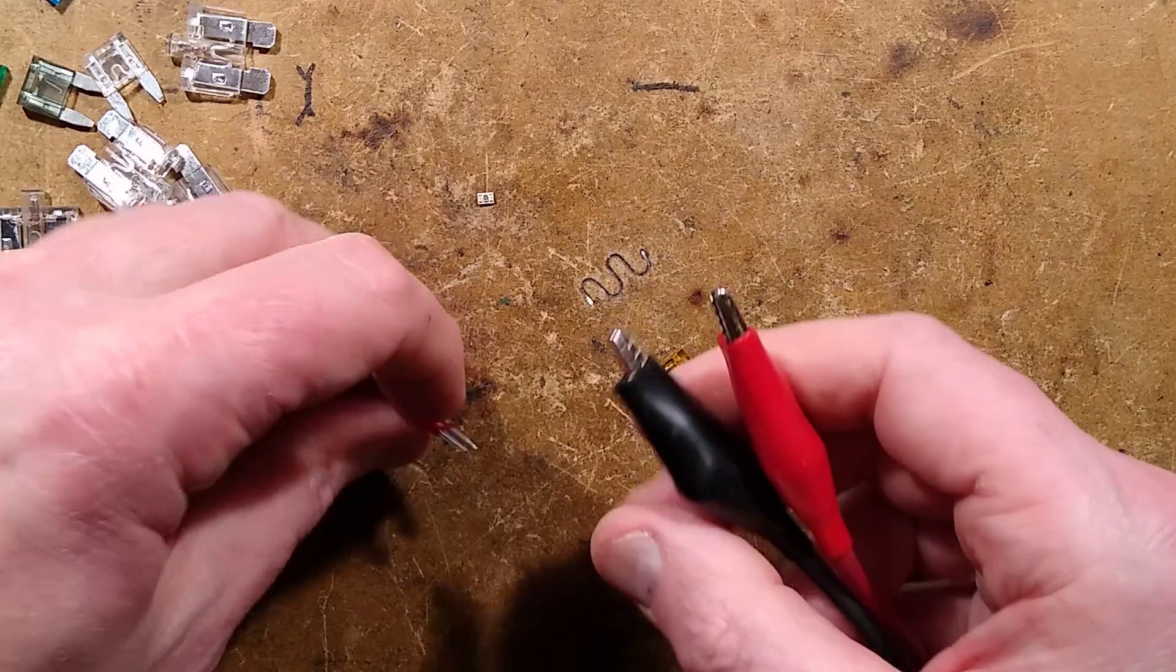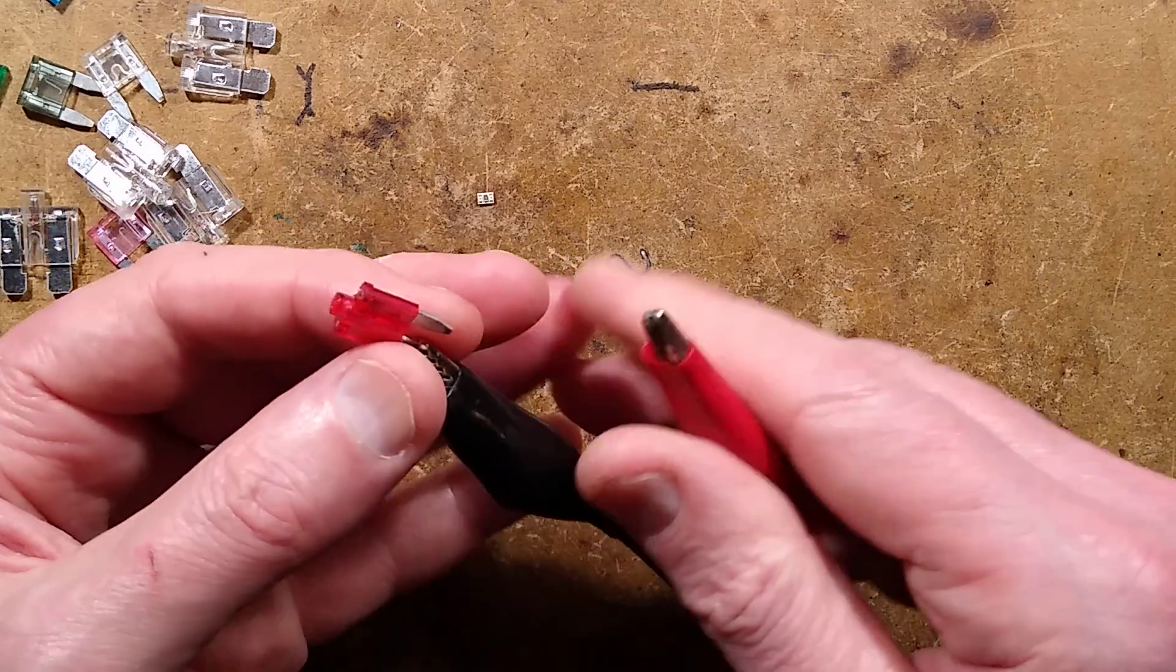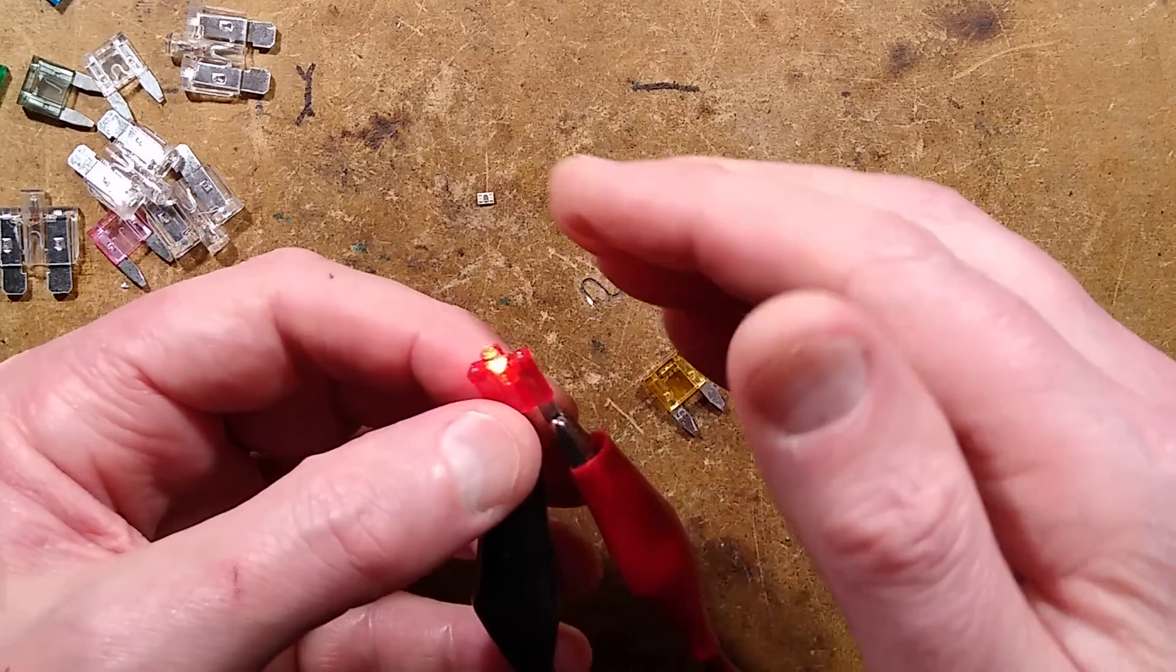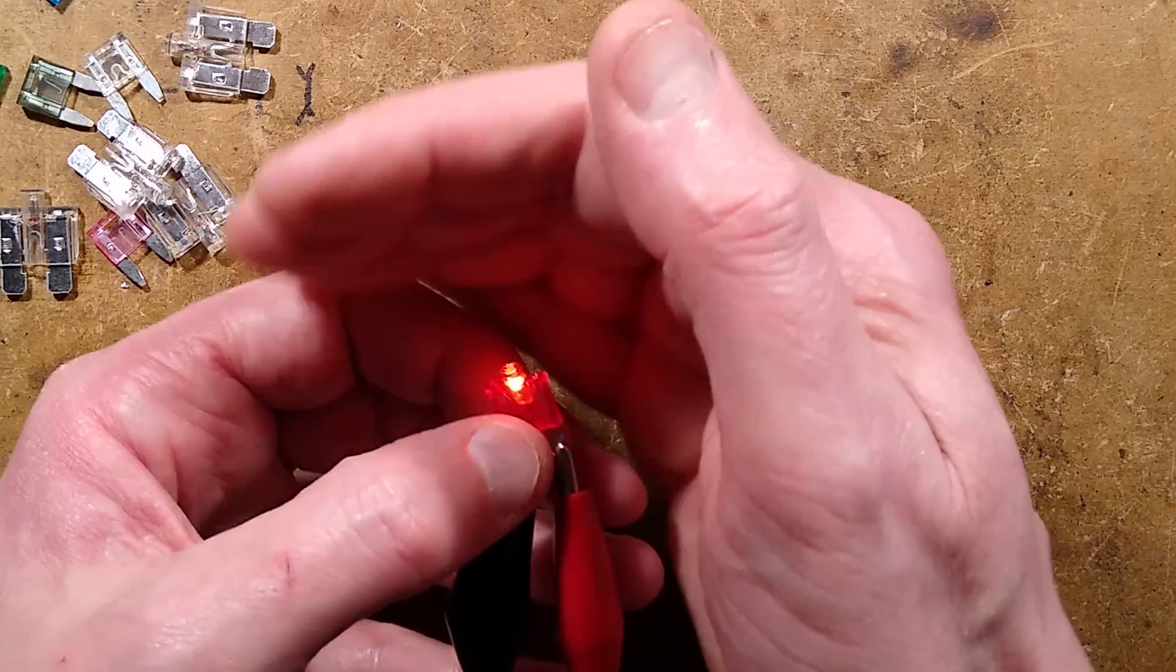Here is another version. It's the miniature fuse, and this also is tungsten-based. And if I put the clips on, you will see it lights up actually a wee bit brighter. It's fairly bright at 40 milliamps.